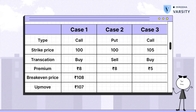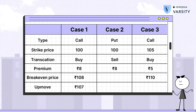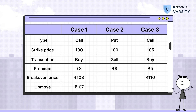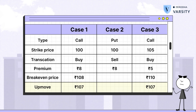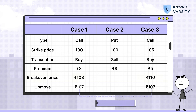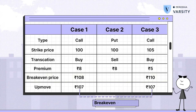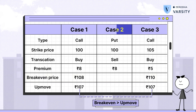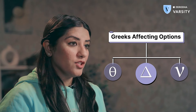So your break-even will be 105 plus 5, that is 110. Now in both these cases where we buy the call, the problem is that the upmove assumption we took is less than the break-even. This means our break-even is higher and our upmove is not sufficient. So in such cases, if you short the put, it will be better.